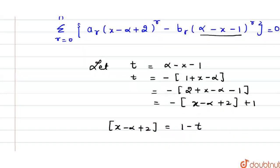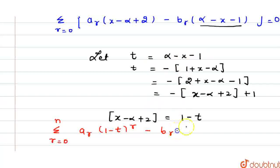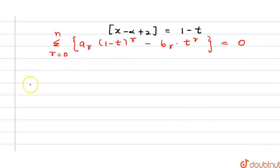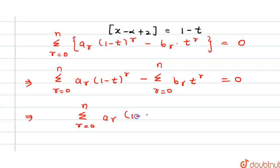So, if we rewrite the expression, this will be summation r from 0 to n: ar·(1 minus t) raised to the power r, minus br·t raised to the power r, equals 0. Taking the summation inside, this becomes summation r from 0 to n of ar·(1 minus t)^r, minus summation r from 0 to n of br·t^r, equals 0. Moving the second term to the right-hand side: summation r from 0 to n of ar·(1 minus t)^r equals summation r from 0 to n of br·t^r.